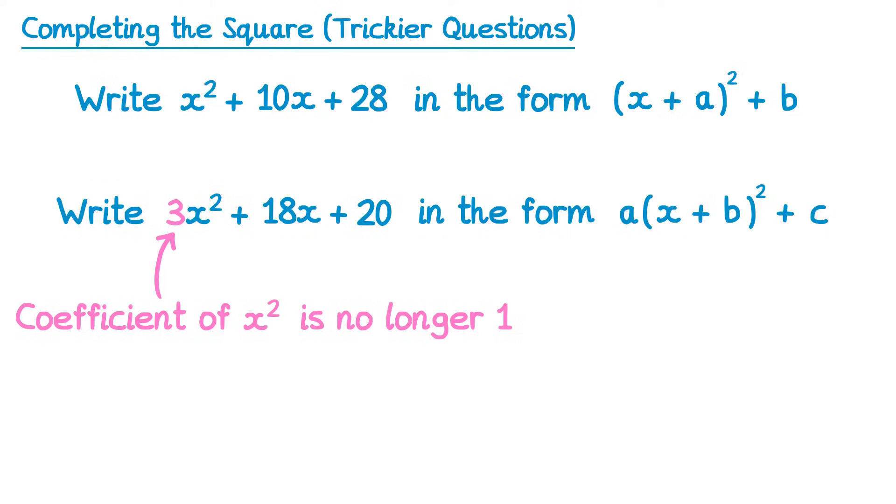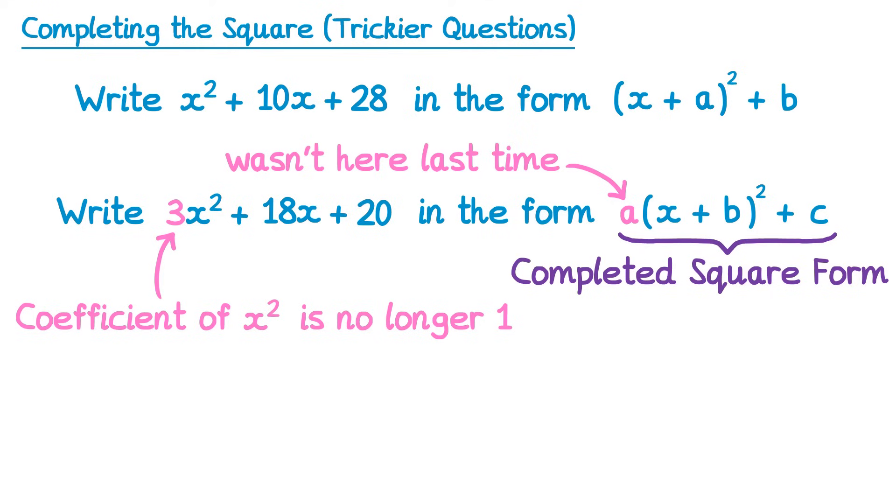There's another difference too if you look at the completed square form. This time there's an a at the front, and this a wasn't here last time. This means that our completed square form will look a little bit different. There'll be a number in front of the bracket, a number inside the bracket, and a number after the bracket, so we need to find a, b and c this time.